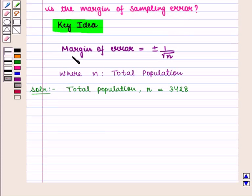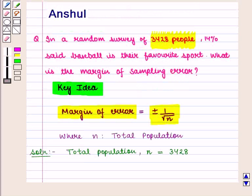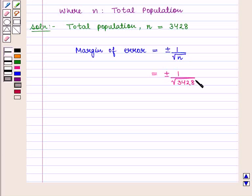And we know that margin of error is given by plus minus of 1 upon square root of n. We need to find margin of sampling error in this question. So margin of error is equal to plus minus of 1 upon square root of 3428, and this is equal to plus minus of 0.0154.